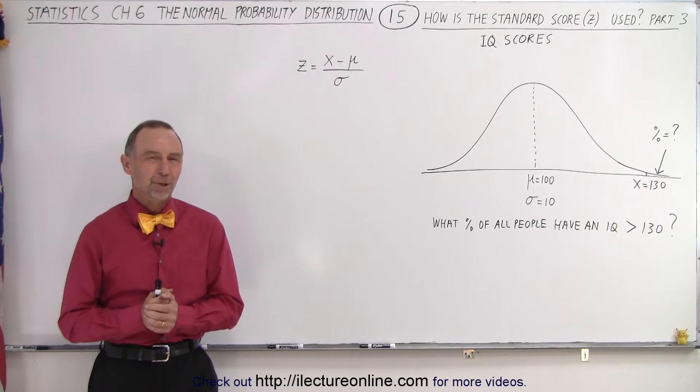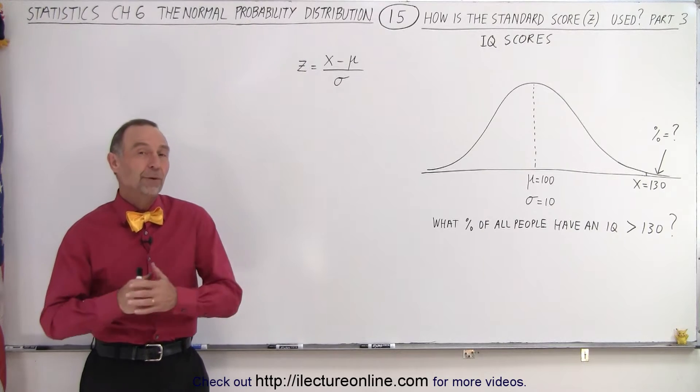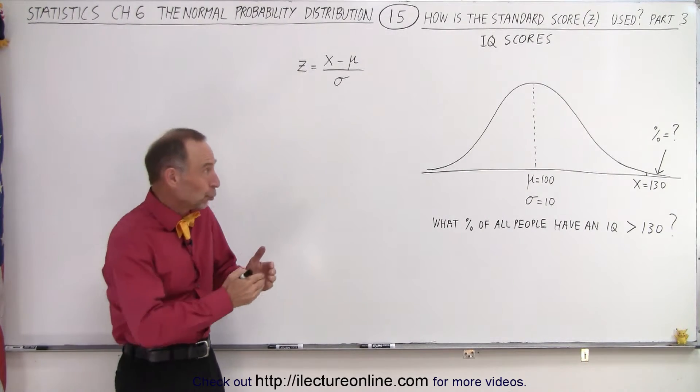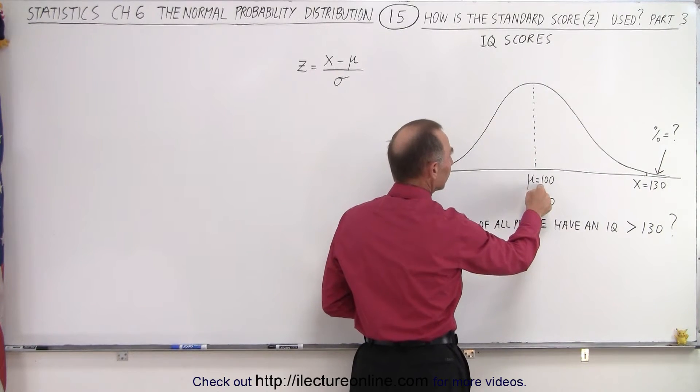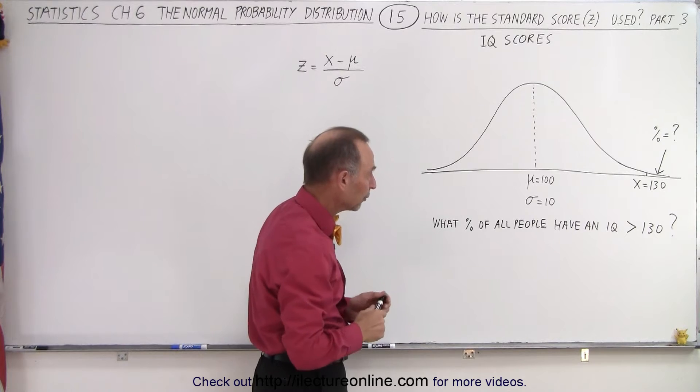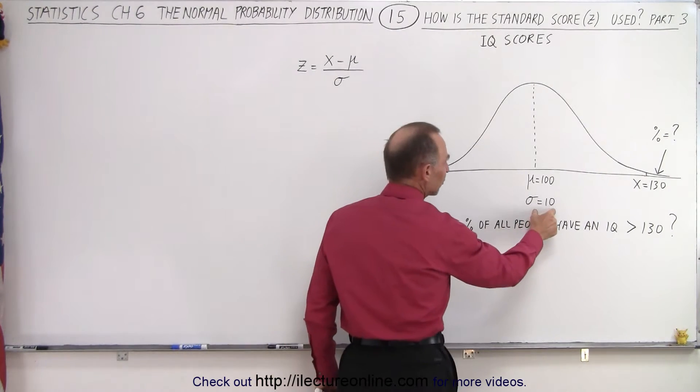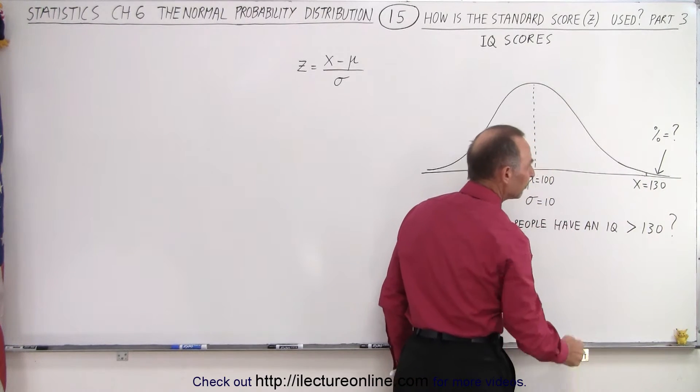Welcome to iLectureOnline. You may have wondered how many people have an IQ above 130. Well, if we have the normal distribution represented here with a mean of 100, that means on average the average person would have an IQ of 100 with a standard deviation of 10. How many people would have an IQ of 130 or above?